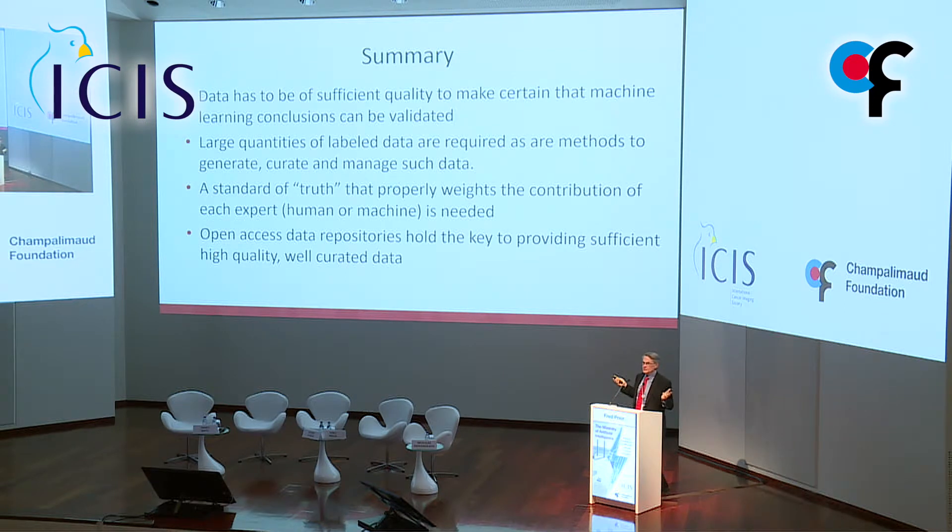My summary is that we really have to have high-quality data and huge quantities of labeled data. Human labels alone won't achieve the scale we need, and human label data for machine learning can be a trap: if the algorithm does better than the human expert, it will always be penalized because the human expert was the definition of truth. We need models of truth that don't penalize better-performing algorithms. The answer is open access repositories that allow us to all share this information — and we've been pretty successful at building such repositories.